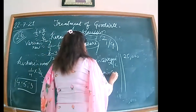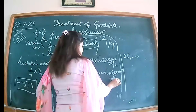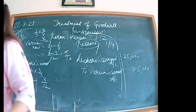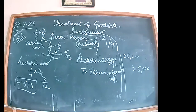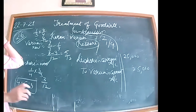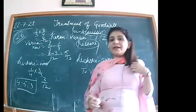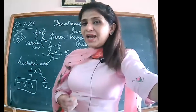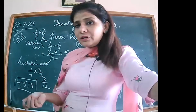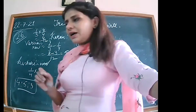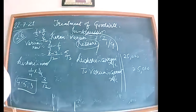This is a very important and tricky question, but with understanding it can be done. The narration: credit given for goodwill to Varun on Kishore's admission. Premium for goodwill account is only opened when the incoming partner brings his or her share of goodwill in cash. Since Kishore is not bringing it in cash, we only debit his current account. That completes illustration 26.